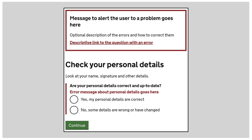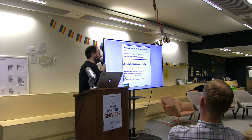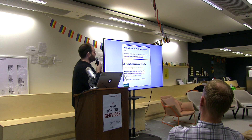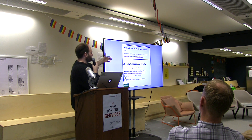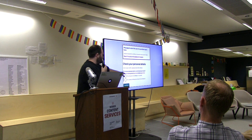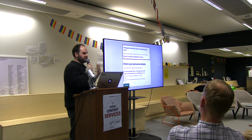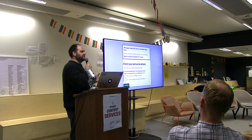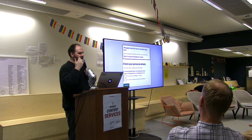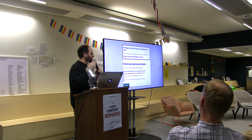This is the pattern that we have now — this is what it looked like in July last year. As you can see, all the content doesn't actually say anything. It says things like 'message to alert the user here,' 'optional description,' 'error message goes here.' So people were just writing really random error messages without really thinking about it.